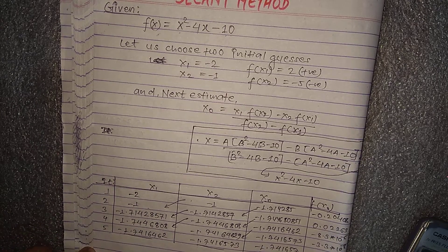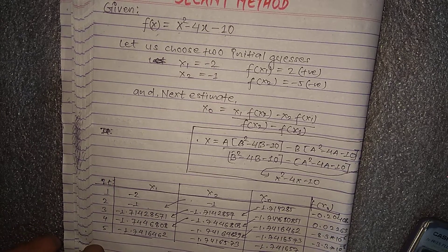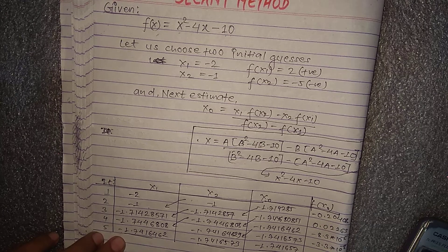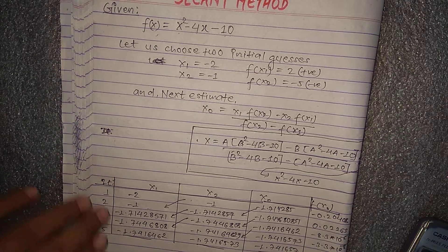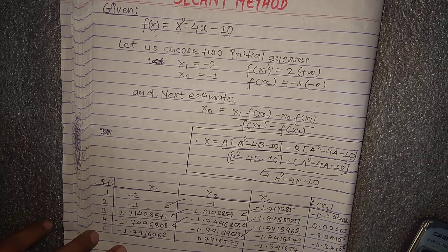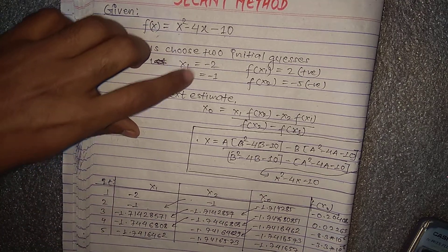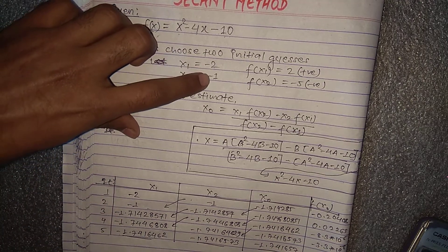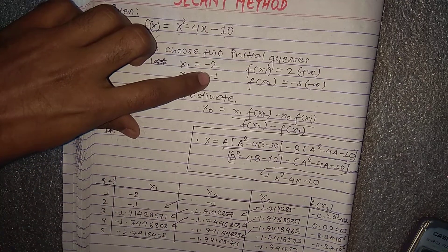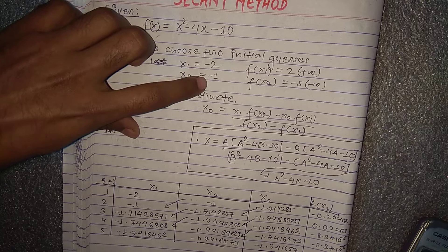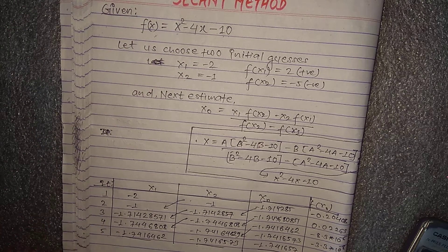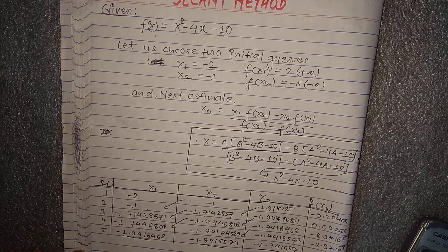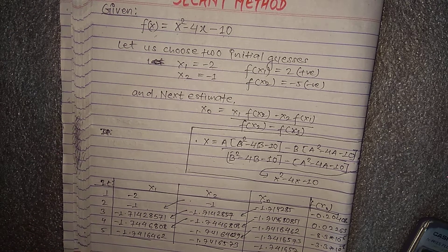So the required root is approximately minus 1.71416462. This confirms that the root lies between minus 2 and minus 1. In this way we can find the root using the Secant method. Thank you.